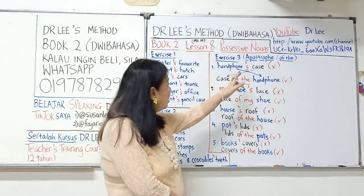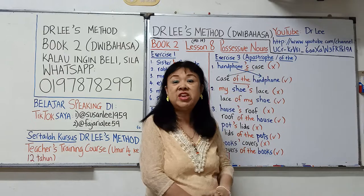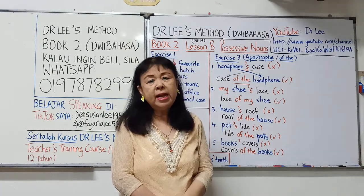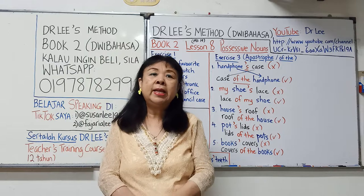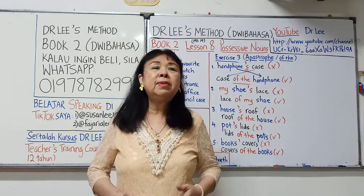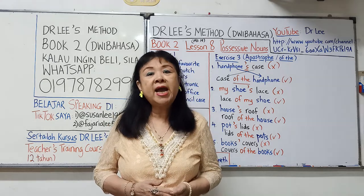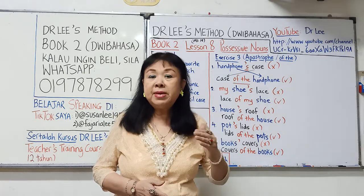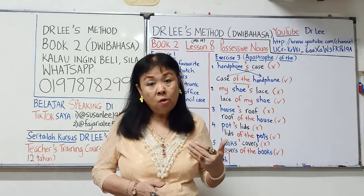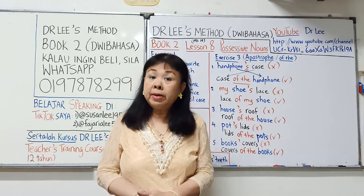Possessive nouns artinya apostrophe, ataupun 'of the'. Dalam bahasa Melayu, possessive nouns artinya kepunyaan — kepunyaan binatang, kepunyaan orang, manusia.